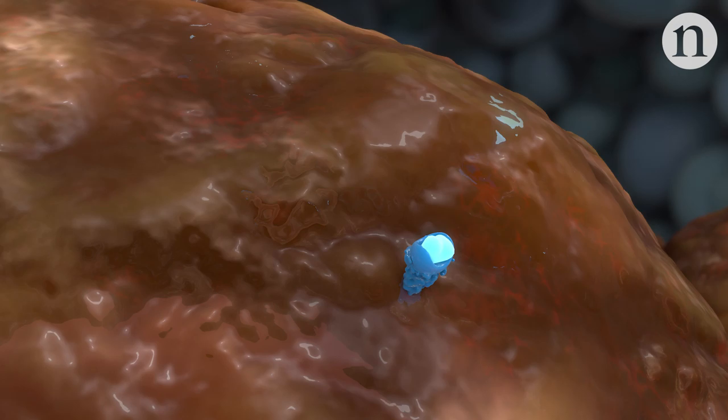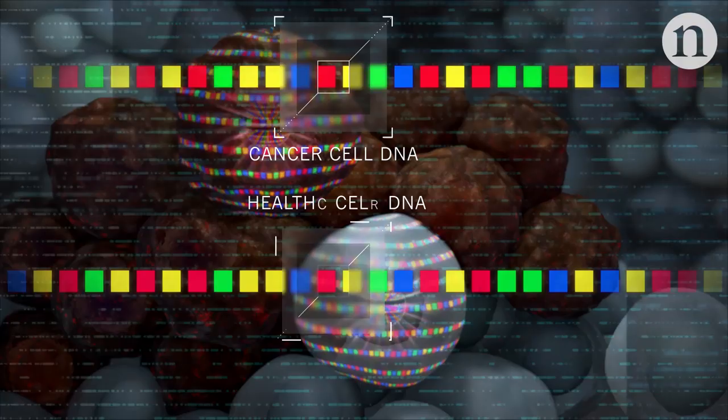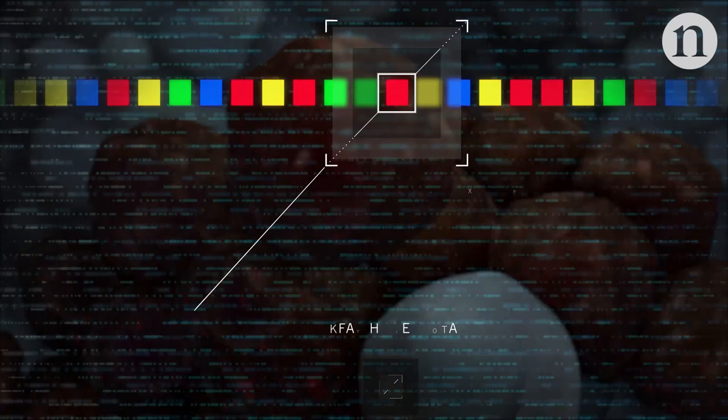And to find out which mutations lead to neoantigens, researchers can use sequencing. Comparing the DNA from cancer cells with healthy cells shows which mutations the cancer has. And sequencing RNA can then show which abnormal proteins might be produced.